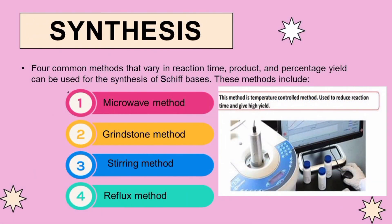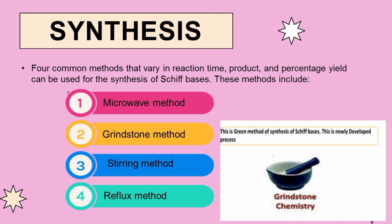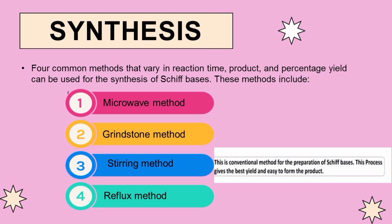There are various methods for the synthesis of Schiff bases, which vary in reaction time, product, and percentage yield. The first method is the microwave method, a temperature-controlled method used to reduce reaction time and give high percentage yield. The second method is the grindstone method, a green and newly developed method for the synthesis of Schiff bases. The third method is the stirring method, a conventional method that gives the best yield but is slower and time-consuming.